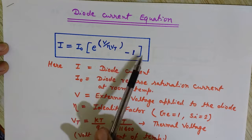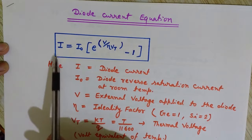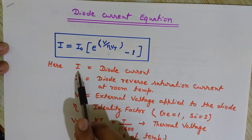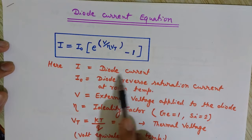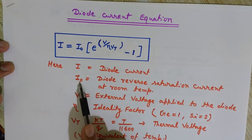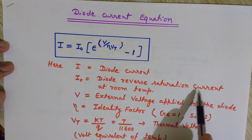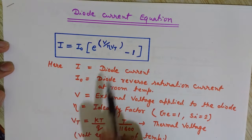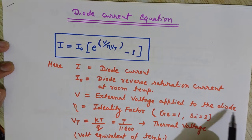eta times VT, minus 1. Learn this equation and keep it in mind. Here, I is the diode current — the current flowing through the diode. I₀ is the reverse saturation current that flows through the diode at room temperature. V is the external voltage applied to the diode.